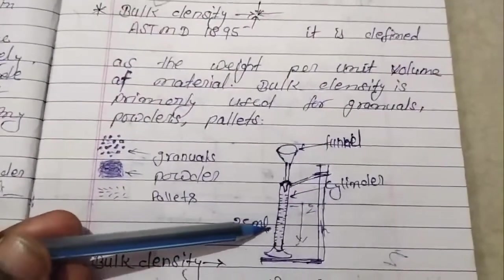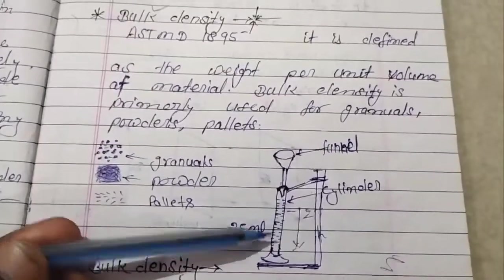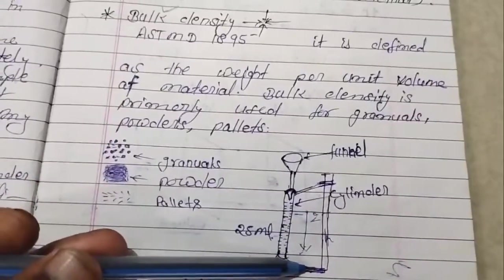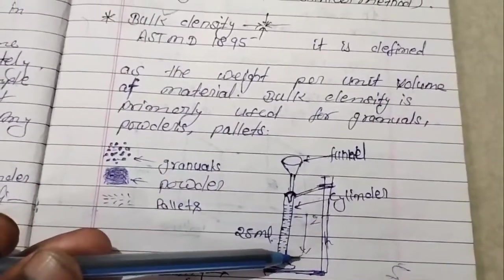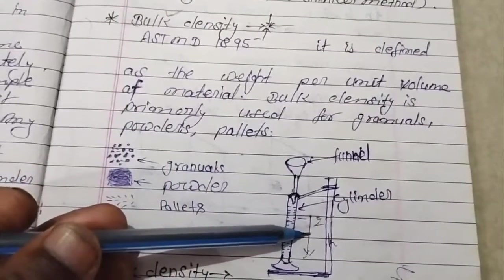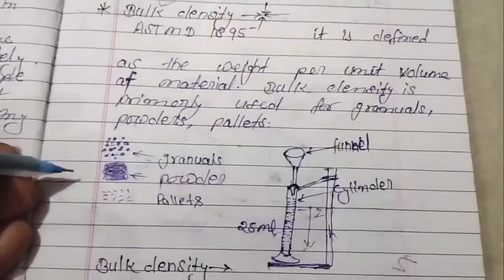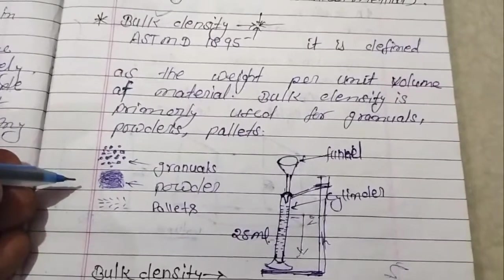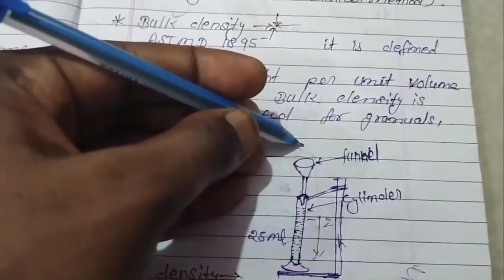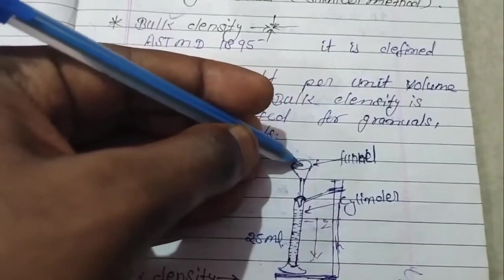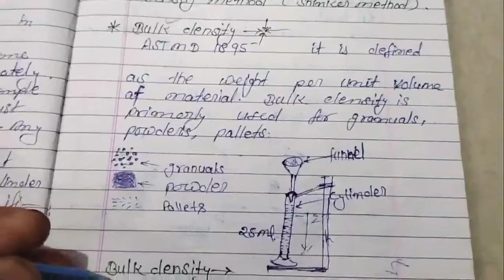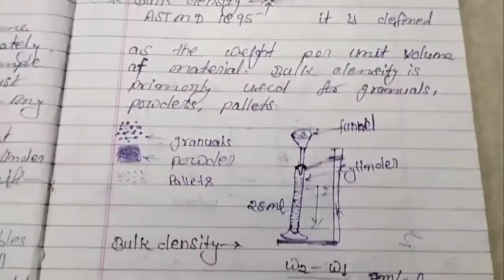This is the cylinder, this is the funnel, and this is the stand. The cylinder and funnel are held by the stand. We take the powder form material and fill it in the funnel. The cylinder has 25 ml capacity, so we take it to 20 ml. First, we take the weight of the empty